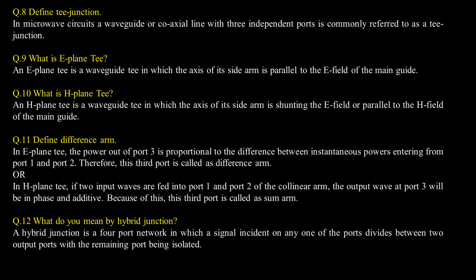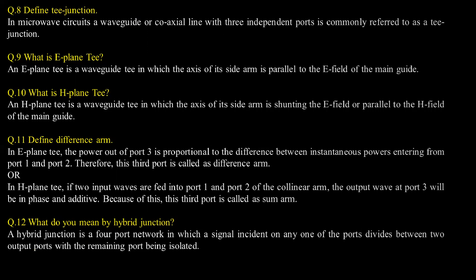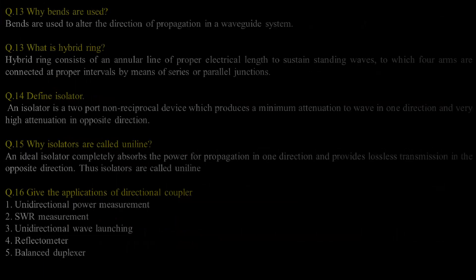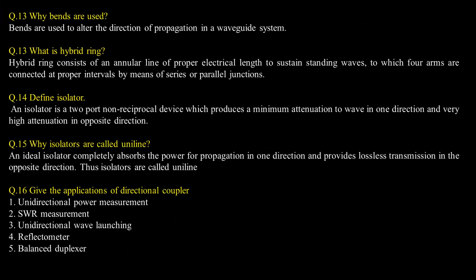What do you mean by hybrid junction? A hybrid junction is a four-port network in which a signal incident on any one of the ports divides between two output ports with the remaining port being isolated. It is also called the magic T. Why are bends used? Bends are used to alter the direction of propagation in a waveguide system.